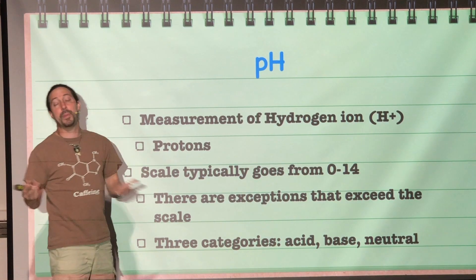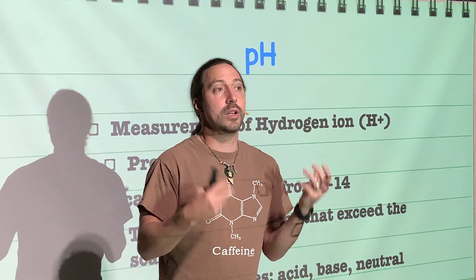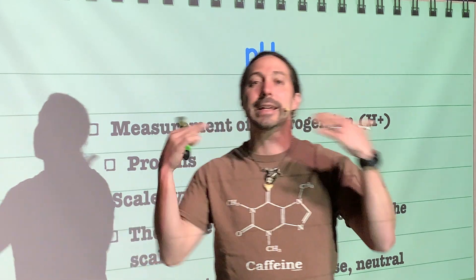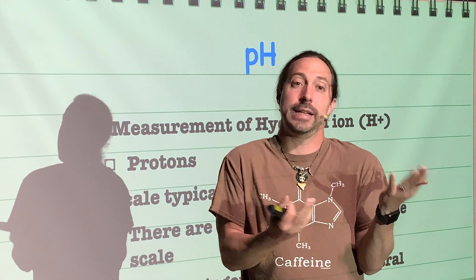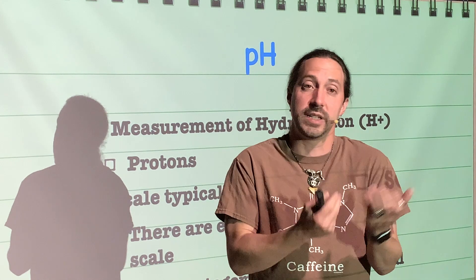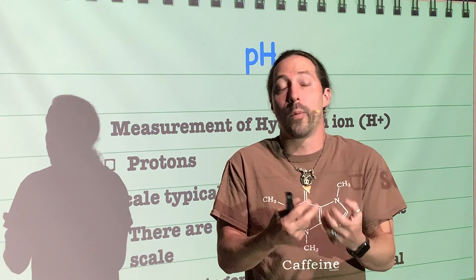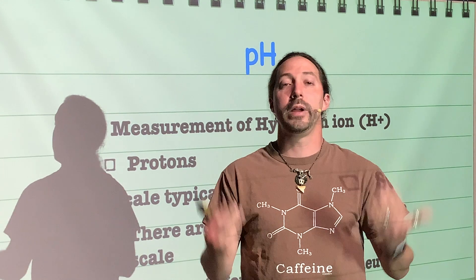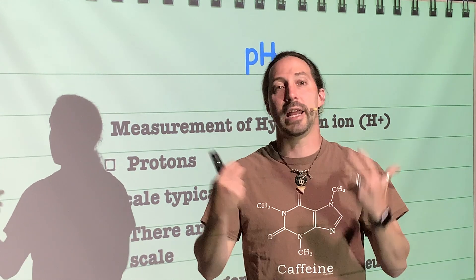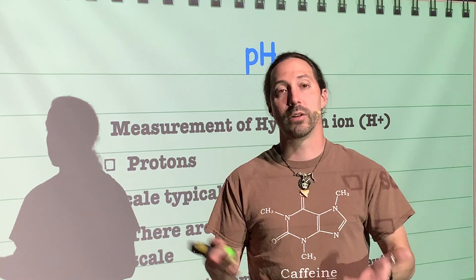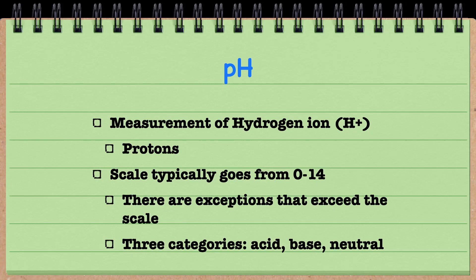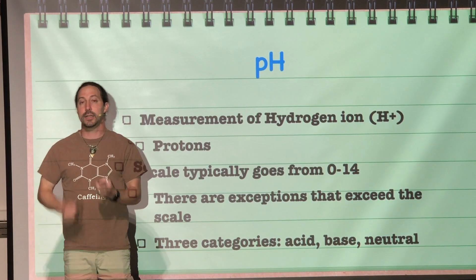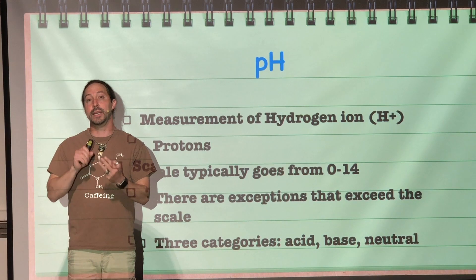The scale typically goes from 0 to 14, but it can exceed 0 and it can exceed 14. So we can go above 14, go to 15 or 16, or we can go into the negatives. But for most purposes, we are going to only be looking at solutions that have a pH between 0 and 14. And there are three different categories that a solution can exist in. It can either be acidic, basic, or it can be neutral.